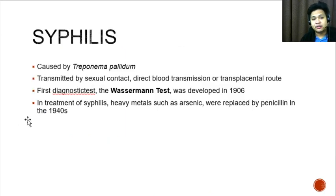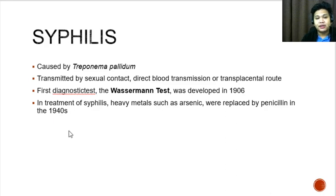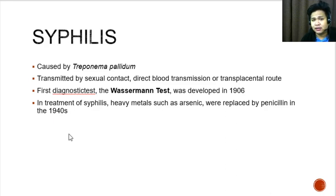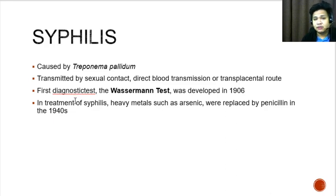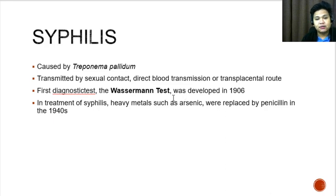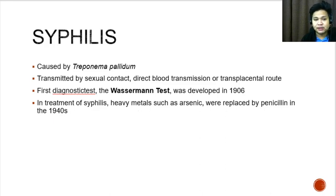Syphilis is caused by the organism Treponema pallidum. It is transmitted by sexual contact, direct blood transmission, or the transplacental route. The first diagnostic test for syphilis was the Wassermann test, developed in 1906. In the treatment of syphilis, heavy metals such as arsenic were replaced by penicillin in the 1940s.